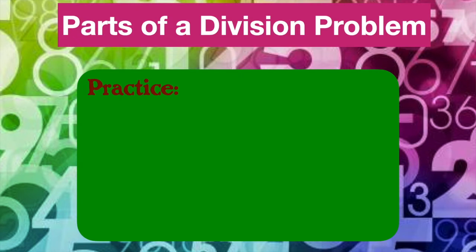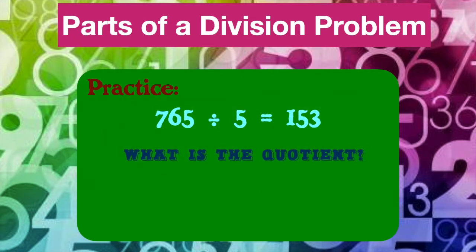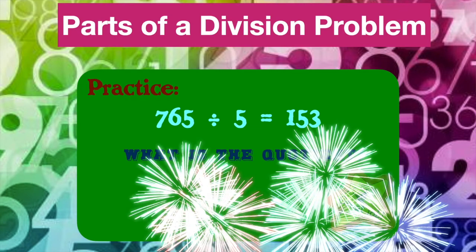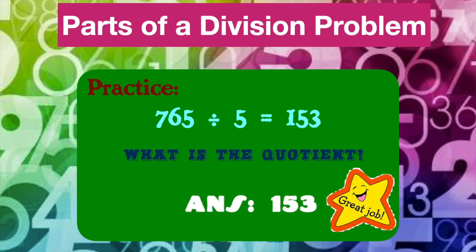Can you identify the parts of this division problem? Look at the equation: 765 divided by 5 is equal to 153. What is the quotient? I'll give you a minute to think. If you said 153, you are correct. 153 is our quotient. It is the result obtained. Beautiful job, guys.